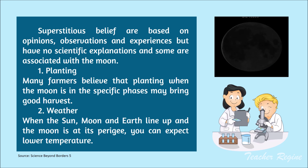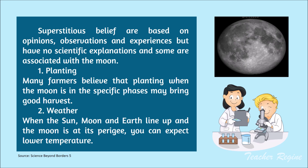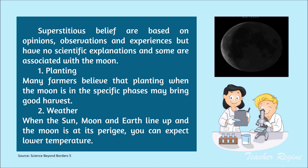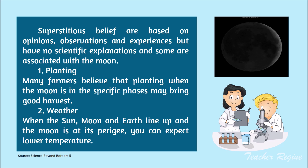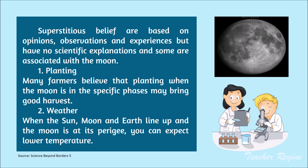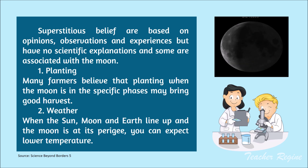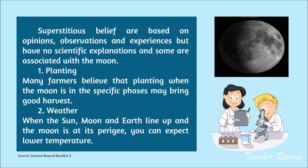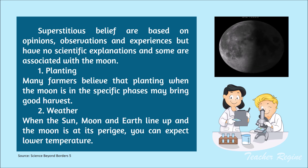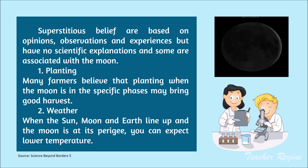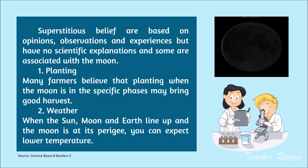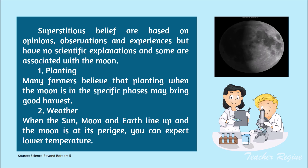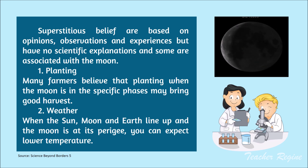The next one is weather. When the sun, moon, and Earth line up and the moon is at its perigee — closest to the Earth — you can expect lower temperatures. The moon does affect weather but not significantly. It affects the atmosphere the same way it affects the ocean. When the phase of the moon is full moon or new moon, it causes a bulge in the ocean. A similar thing happens with the atmosphere — it attracts the atmosphere to itself.